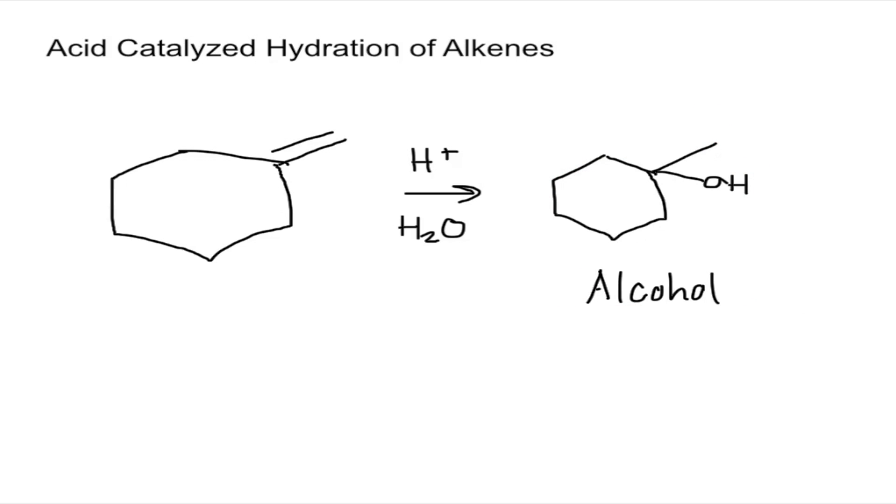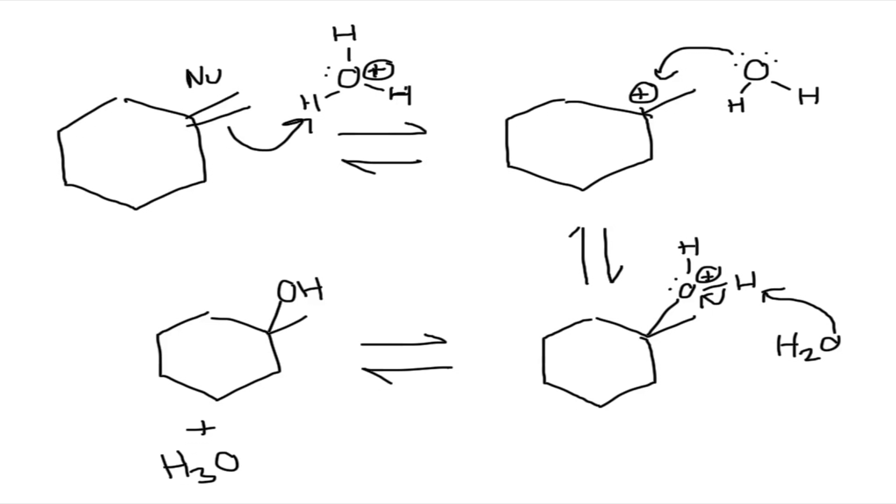Now let's look at the exact mechanism. You're going to start with the alkene. The alkene is going to act as a nucleophile and attack a hydrogen from an acid. In this situation we have H3O+. This is going to attack that hydrogen and then it's going to make a carbocation. Remember it makes the tertiary carbocation because it's more stable.